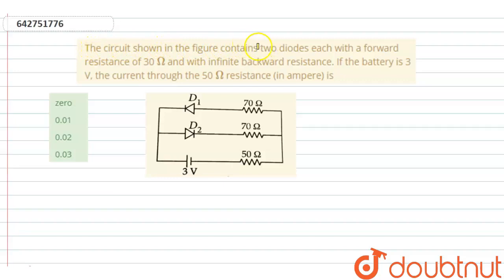The circuit shown in figure contains two diodes, each with a forward resistance of 30 ohm and with infinite backward resistance. If the battery is 3 volt, then find the current through 50 ohm resistance.